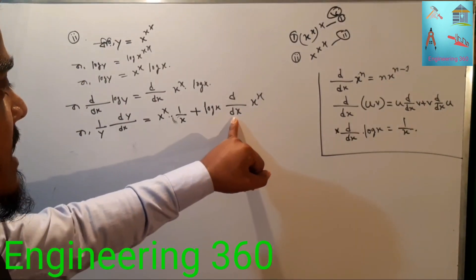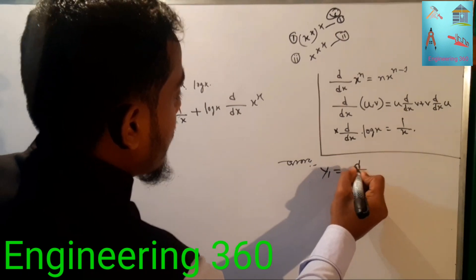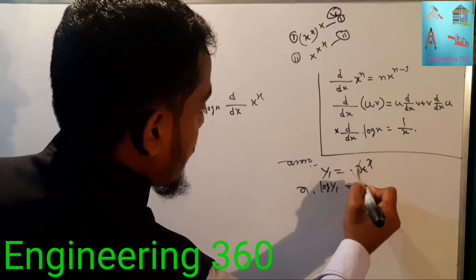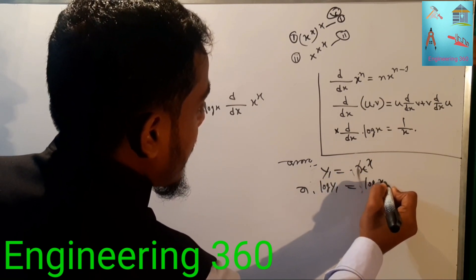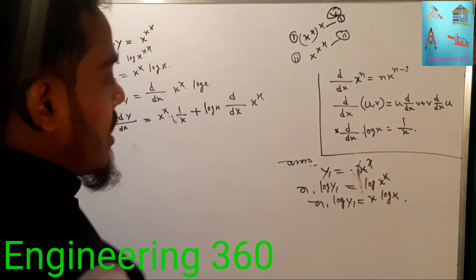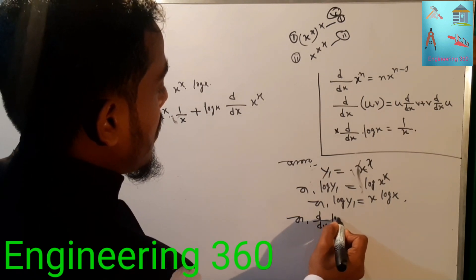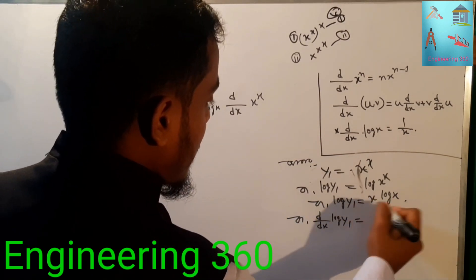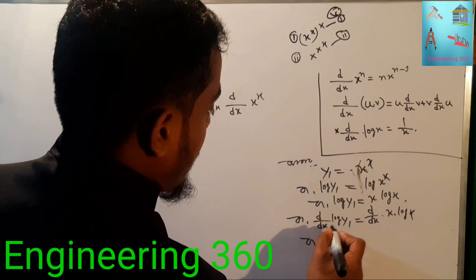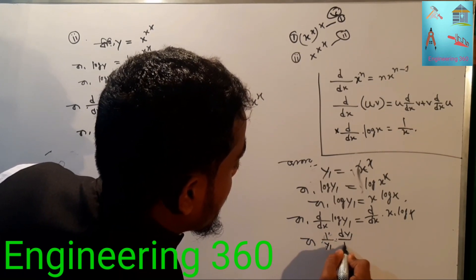Now we need d/dx of x to the power x. Let y1 equal x to the power x. Taking log: log y1 equals x log x. Differentiating: d/dx of log y1 equals d/dx of x log x.